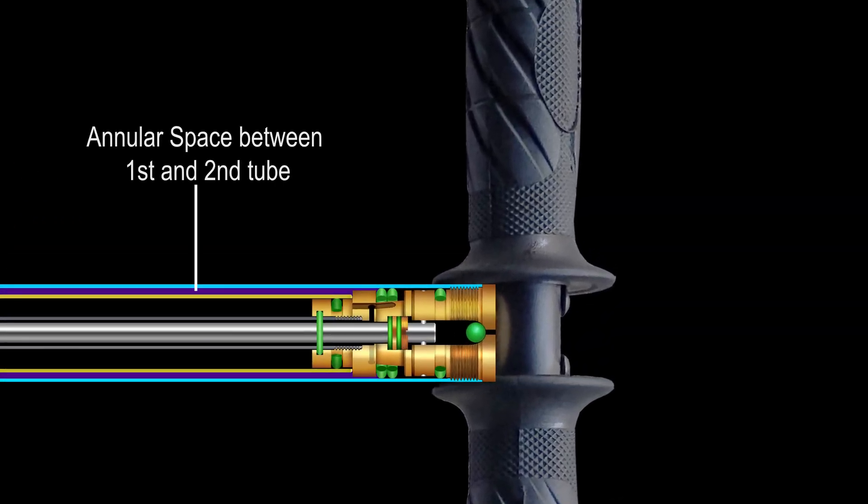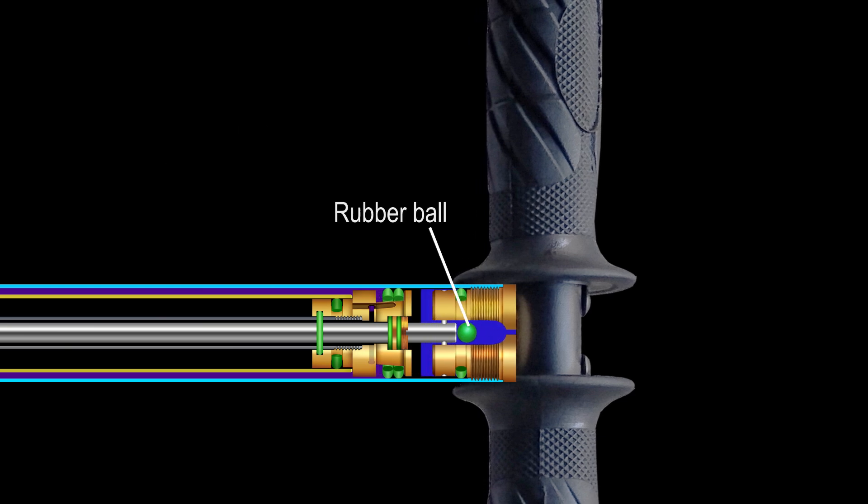In this annular space there's air left from the previous cycle. While pulling the handle, the rubber ball allows air to fill the large chamber of the first tube.